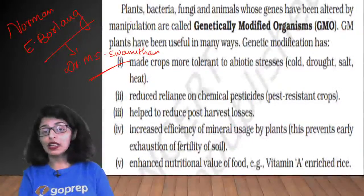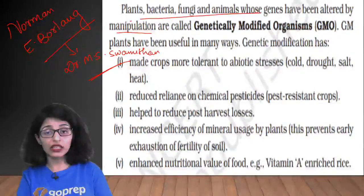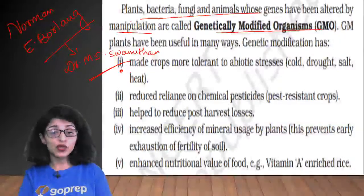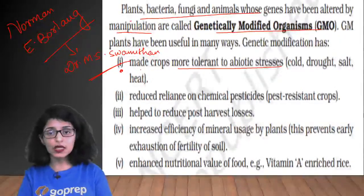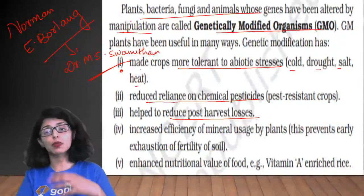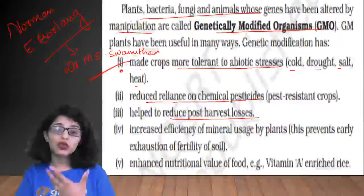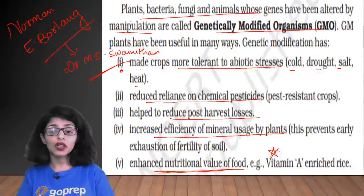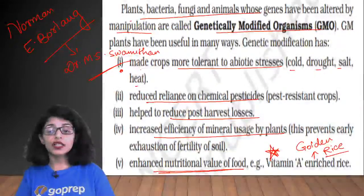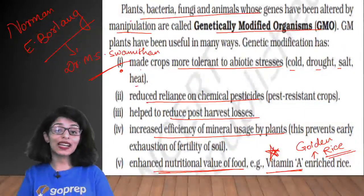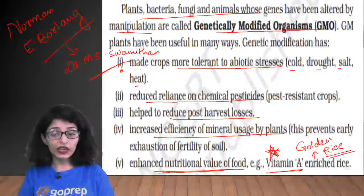GM plants have been useful in many ways. Genetic modification has made crops more tolerant to abiotic stresses — cold, drought, salt, and heat conditions do not destroy them. There is reduced reliance on pesticides, reduced post-harvest losses (fungal infection or rodents cannot destroy the crop), increased efficiency of mineral usage by plants, and enhanced nutritional value. A very important example is vitamin A-enriched rice, known as golden rice, used to correct vitamin A deficiency and prevent night blindness.